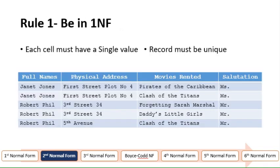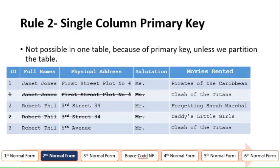In the previous video, we converted this table into the first normal form — each cell must have a single value and records must be unique. Now the problem comes in: it is not possible for this table to have a primary key unless we partition the table.